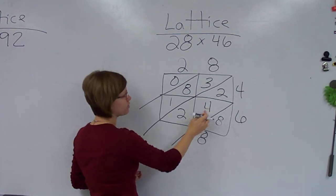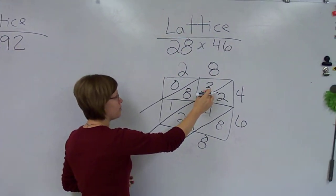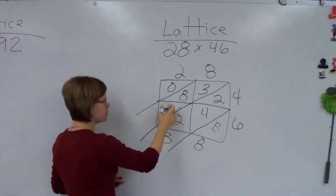In my next column, I've got 2 plus 4, which is 6. 6 plus 2 is 8. My next column, I have 3 plus 8, which is 11, plus 1 is 12.